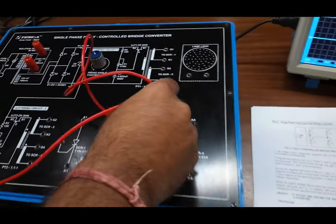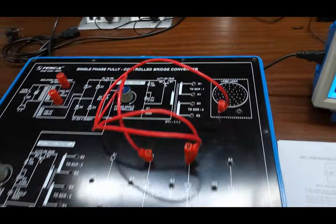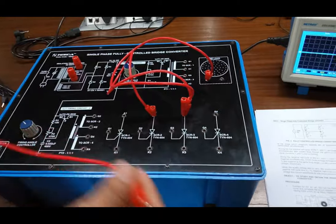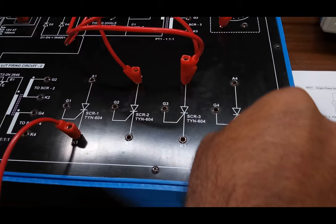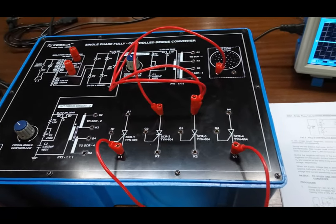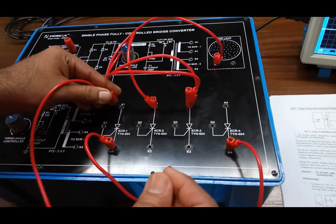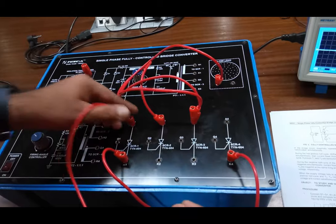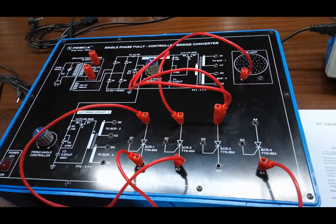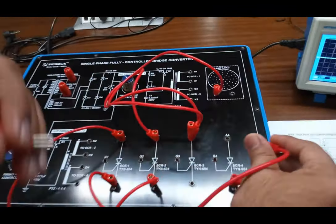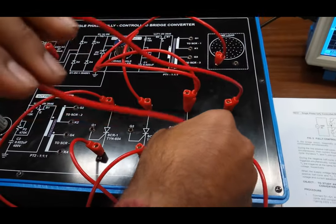One terminal from these short terminals goes to load. Now, we will connect K1 to K4, cathode side. Now, we will connect anode of T1 to cathode of T2. Similarly, anode of T4 to cathode of K3.